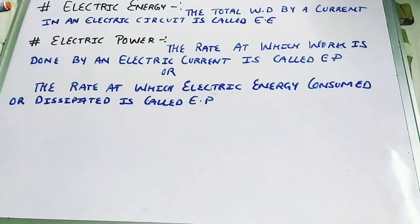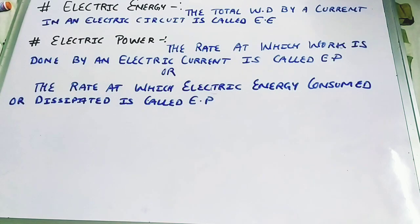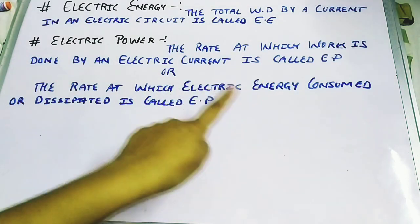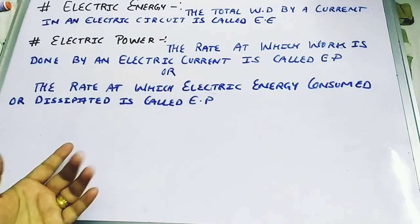We are moving to the last topic of this chapter — electric energy and electric power. What is electric energy? The total work done by a current in an electric circuit is called electrical energy. Energy is the capacity to do work, like when you eat food you have energy to do work.